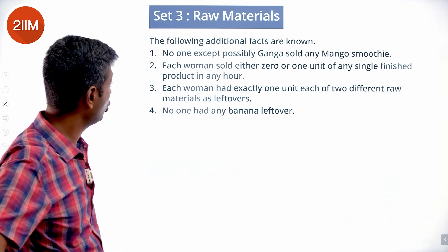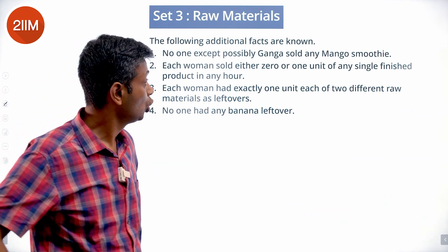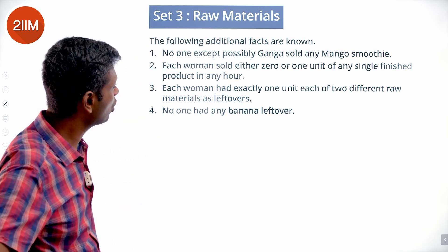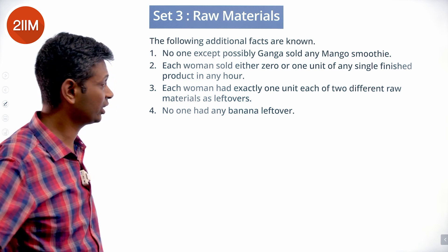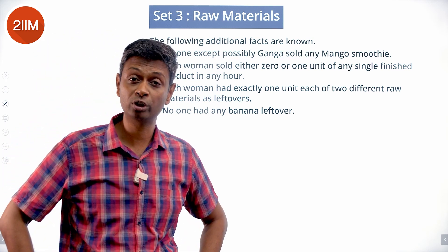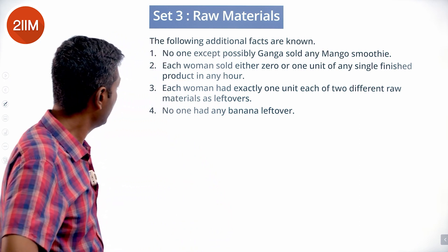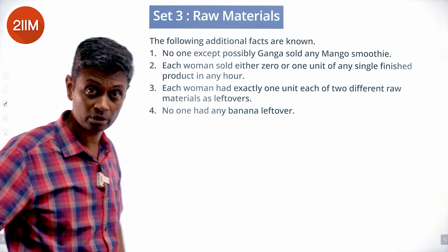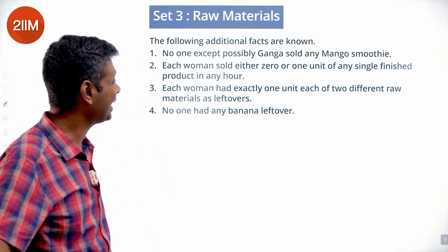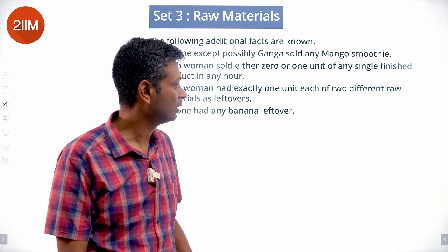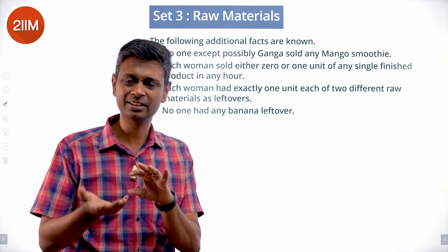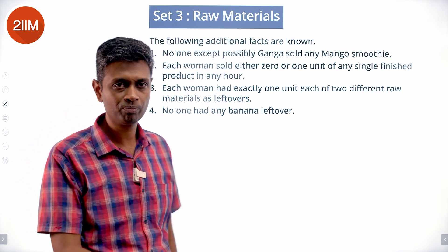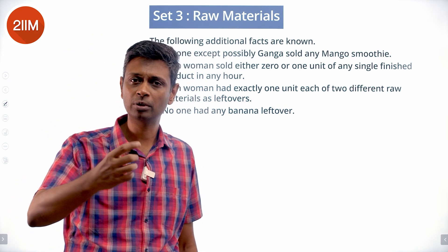The following additional facts are known. No one except possibly Ganga sold any mango smoothie. Each woman sold either 0 or 1 unit of any single finished product in any hour — so they don't sell 2 apple smoothies or 2 banana smoothies. Each woman had exactly 1 unit each of 2 different raw materials as leftovers. No one had any banana left over — so the leftover combinations are milk and mango, mango and apple, or milk and apple.